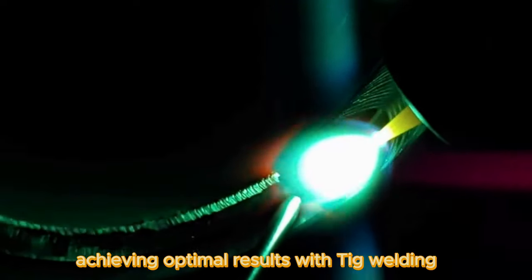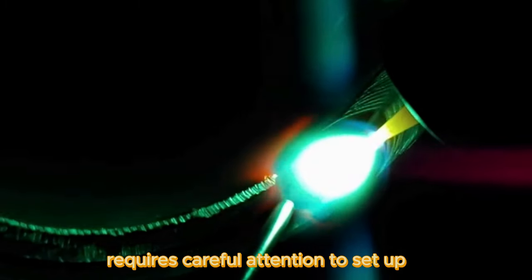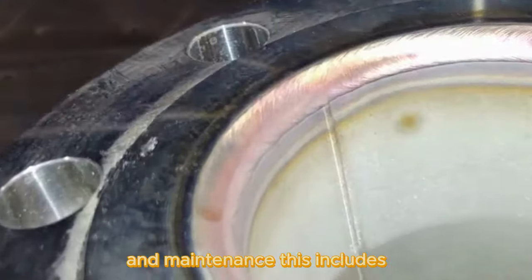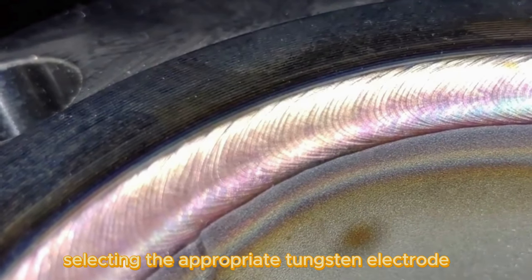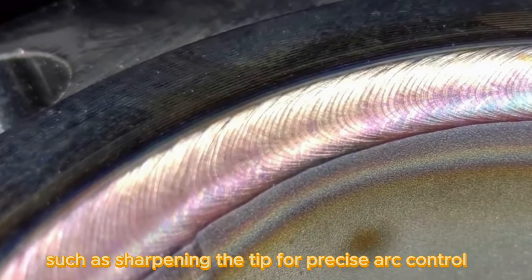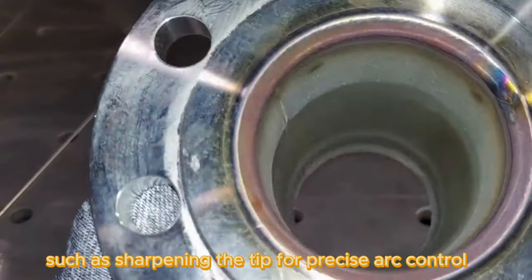Achieving optimal results with TIG welding requires careful attention to setup and maintenance. This includes selecting the appropriate tungsten electrode, ensuring proper electrode preparation, such as sharpening the tip for precise arc control.